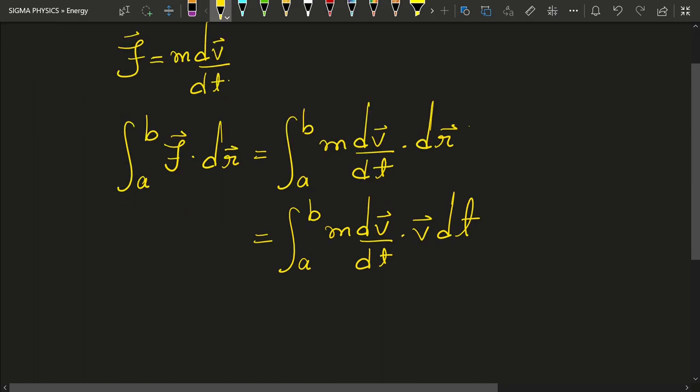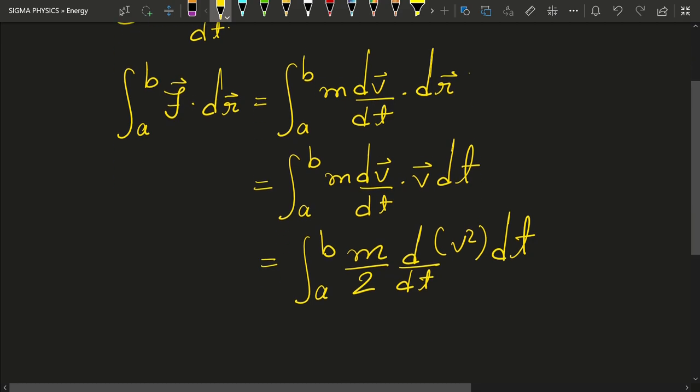Now what I can do is use the product rule for vectors to derive this equation like this. And hence you can see that we can integrate this equation to give the work energy theorem which looks like this.